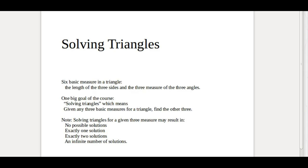Given three measures, there are four possible solution types. It may be that the answer is there are no possible solutions, exactly one solution, exactly two solutions, or an infinite number of solutions. Let's look at some of those examples now.